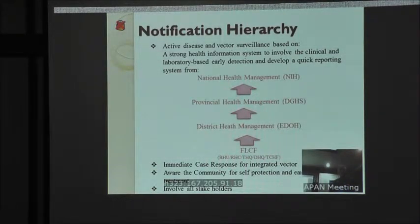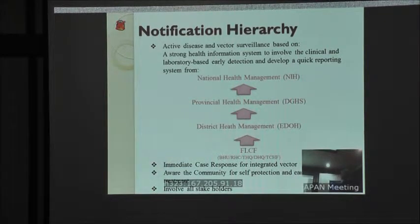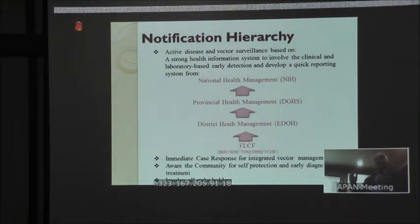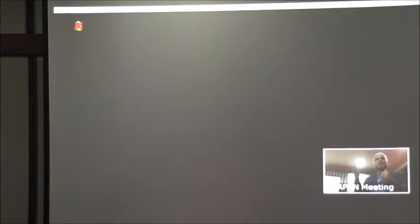The notification hierarchy in Pakistan starts at the first level care facility — basic health units where medical officers work, rural health centres, Tehsil and DHQ headquarters hospitals, and tertiary care hospitals. They notify clinical and lab-confirmed cases to the district health officer, who is supposed to give the response and take action at the grassroots level. Hospitals manage cases, and district officers provide response at the locality and home level.